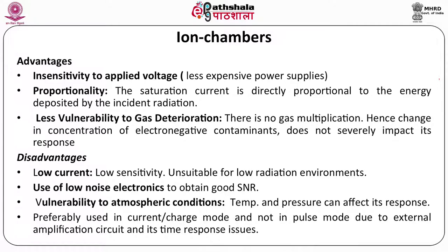In the ion chamber region, the voltage applied does not change the pulse height, meaning the detector is insensitive to applied voltage — translating into a less expensive power supply. The current produced by ionization is directly proportional to the energy deposited by the incident radiation, because all ions produced have been collected. This detector is also less vulnerable to gas deterioration, and changes in concentration of electronegative contaminants do not seriously impact its response.